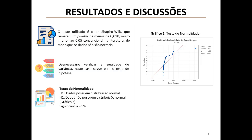The team explains their use of the Shapiro-Wilk test for normality. They report a p-value of less than 0.010, significantly below the conventional 0.05 threshold.